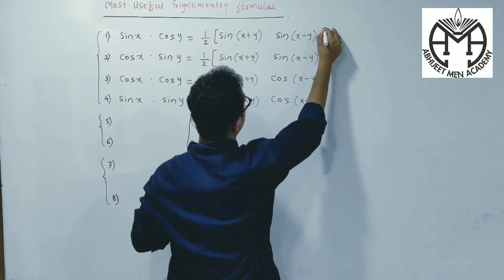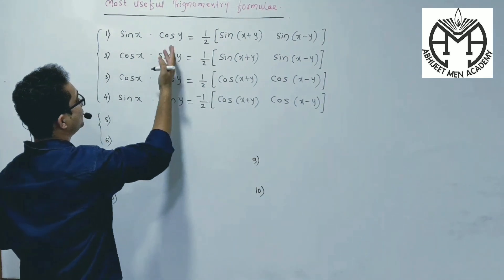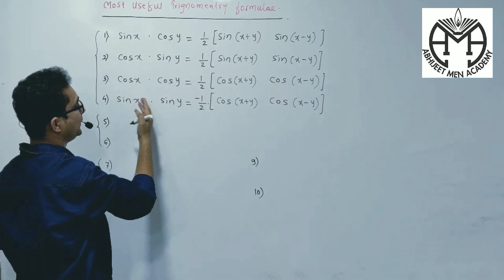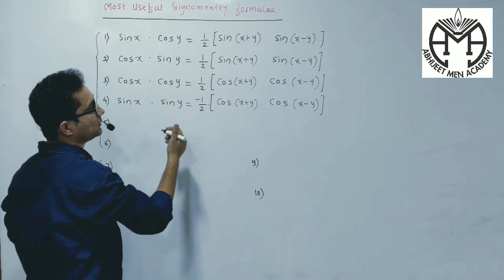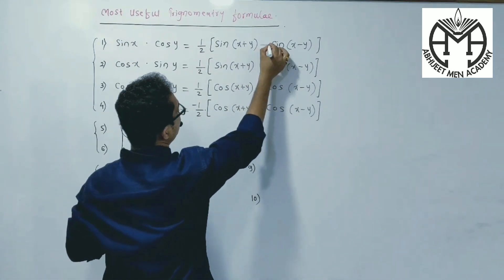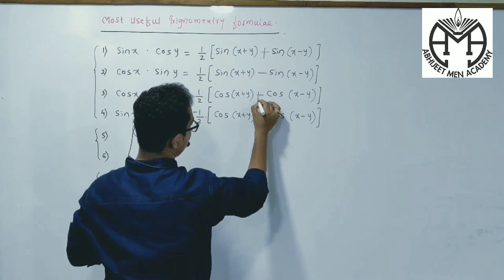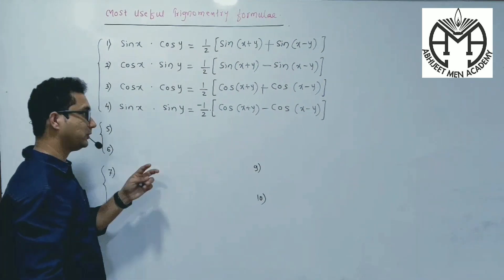And if your sequence is Sin-Cos, or Sin-Cos and Sin-Cos, then the signs will be plus, minus, plus, minus.